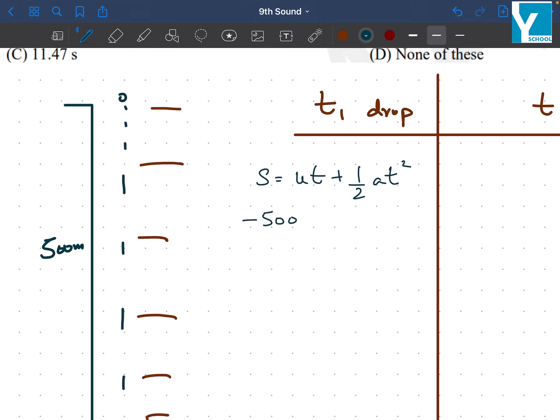Displacement is minus 500 as it is downwards. We don't have any initial velocity so it is 0. And gravity is minus 10, so half 10 t squared, and this will be t1. Here we have 5, this will cancel out, t1 squared equals 100, t1 comes out to be 10 seconds.